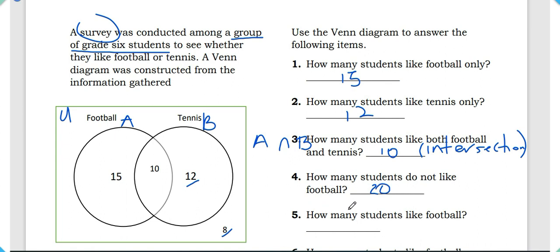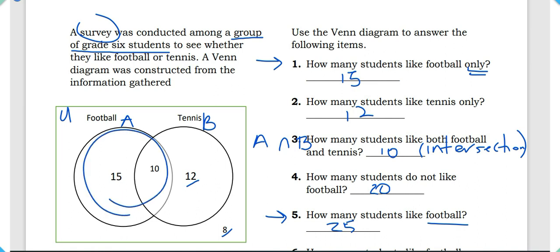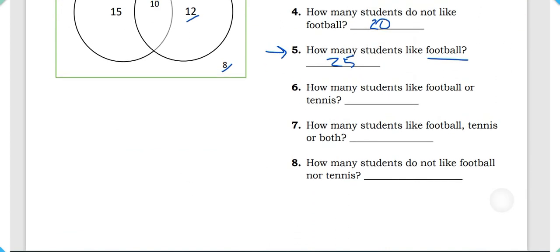Question five: how many students like football? The number of students that like football includes everyone in the football subset, so the answer is 25. This question is different from question one because question one asks how many students like football only — they don't like anything else — whereas question five asks how many students like football overall, which includes those who also like tennis. The answer is 25.